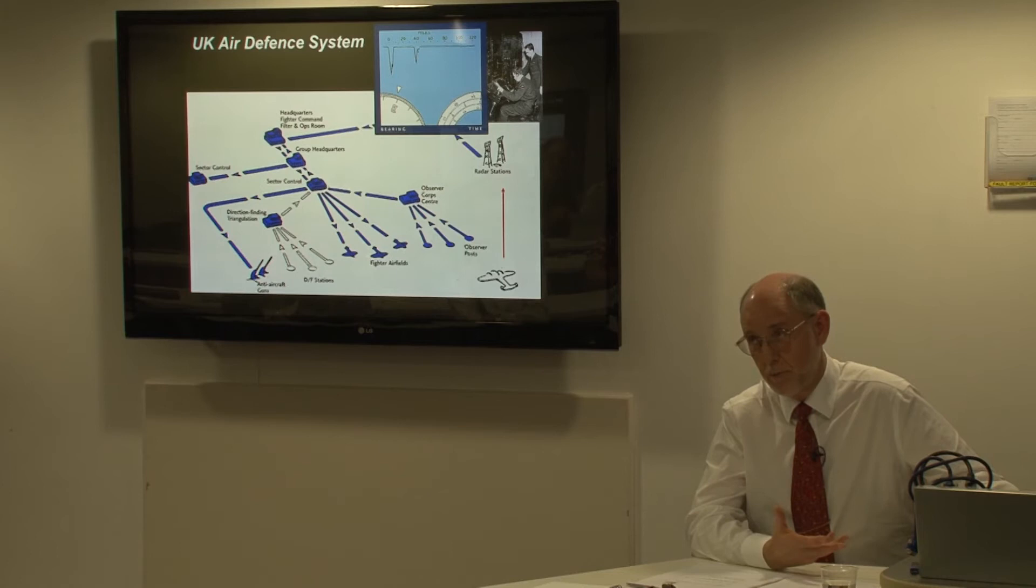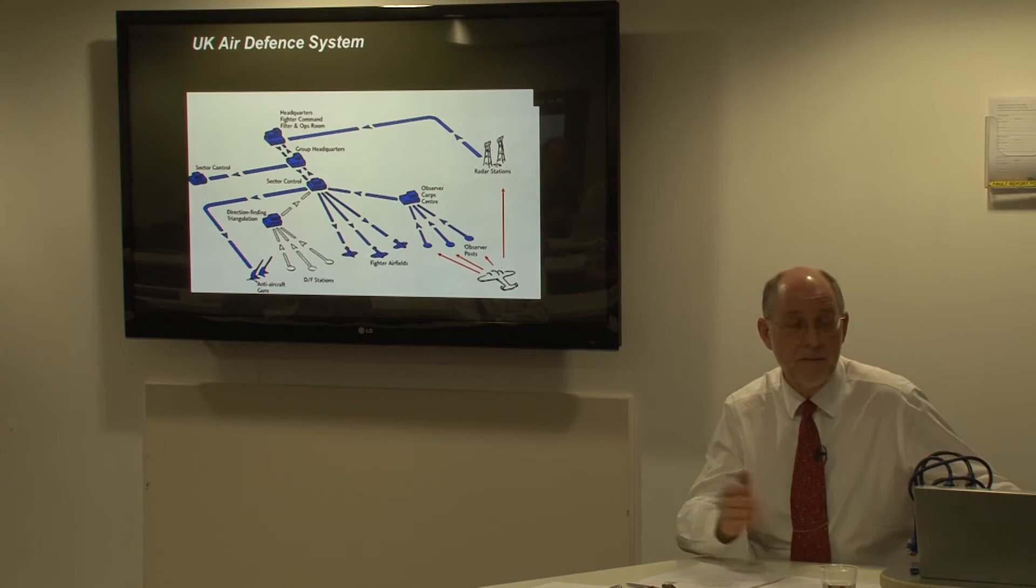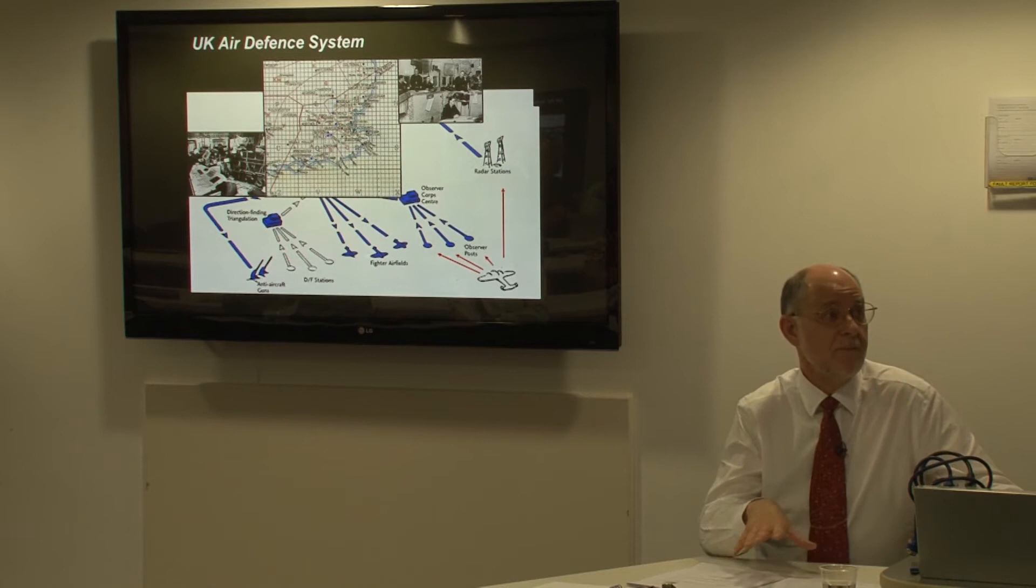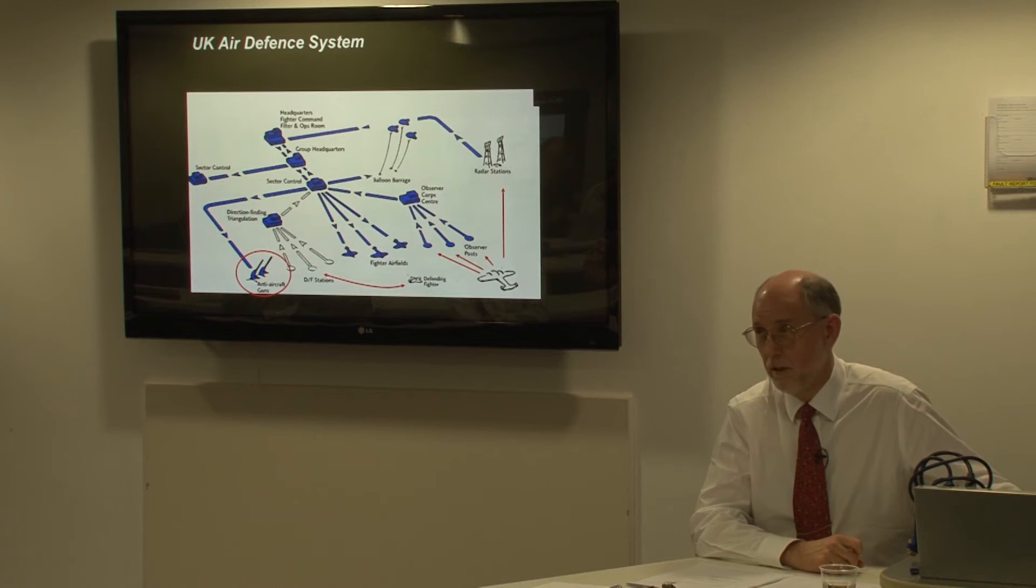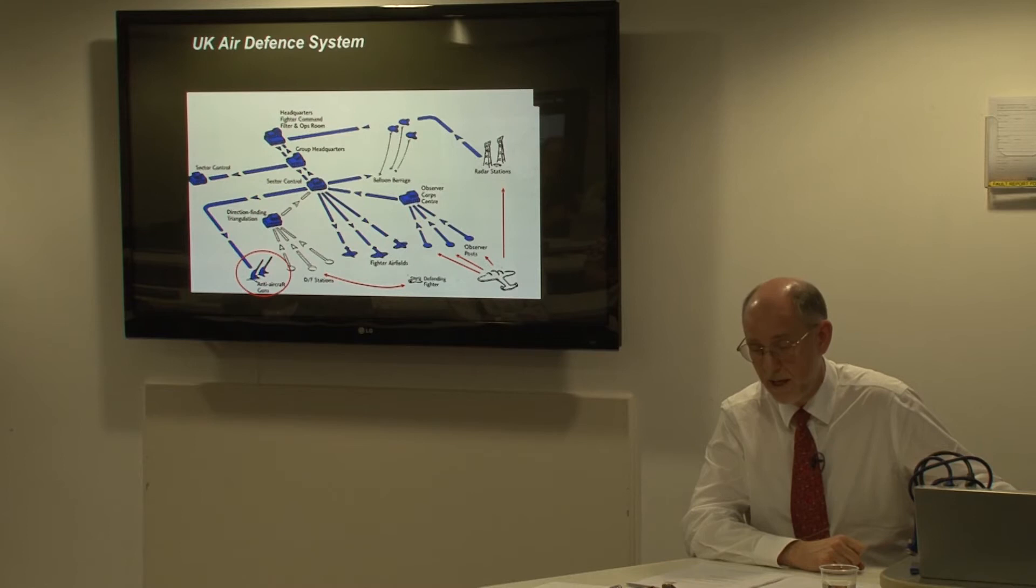Approaching aircraft would be picked up by the Chain Home radar stations. Information would appear on screens to be analyzed by the RAF. There would also be observer posts who would triangulate the information from the radar. All of this was coordinated centrally and instructions sent out. A defending fighter could be sent out, closer in anti-aircraft guns could be deployed, even closer in barrage balloons could be launched so bombers couldn't go down low and get accurate targeting.